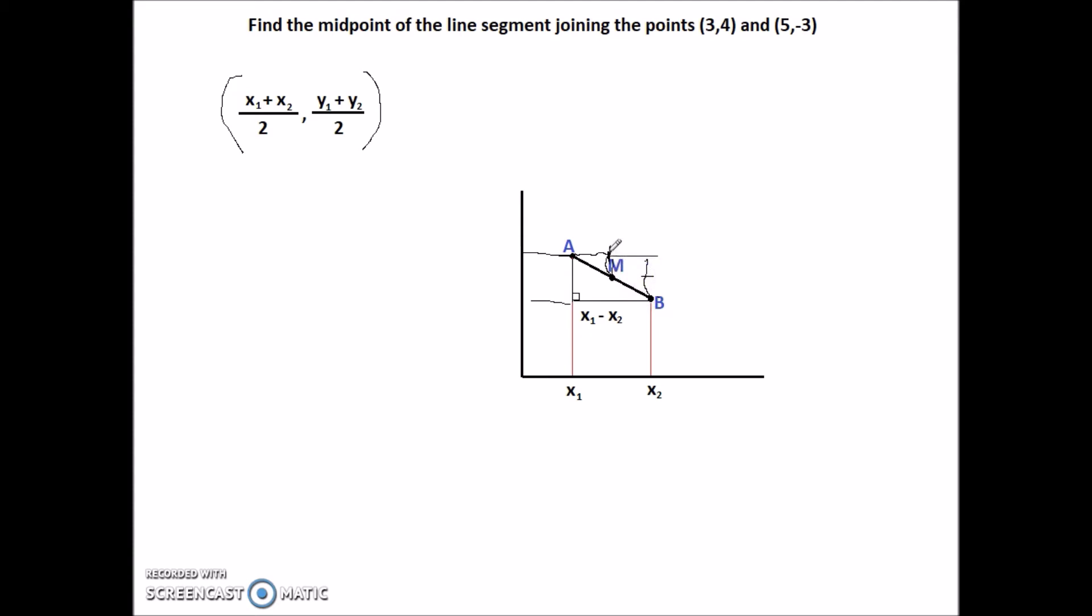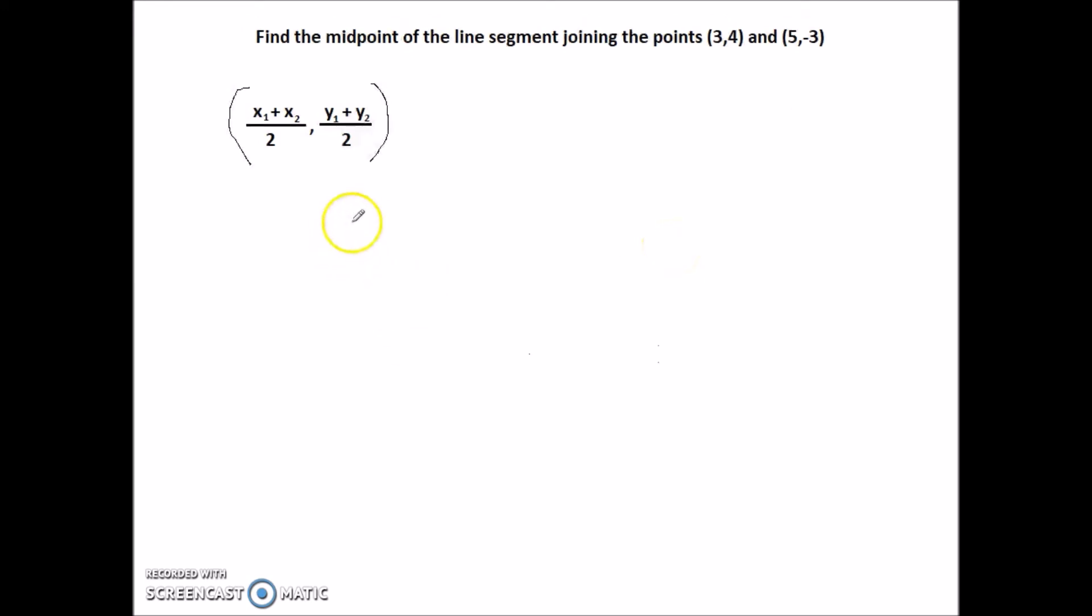So we can determine that the midpoint is exactly halfway laterally and also halfway vertically. And then we can calculate the actual coordinates for this midpoint. And this is where we start to use this formula. The question that we have is: find the midpoint of the line segment joining points (3, 4) and (5, -3).